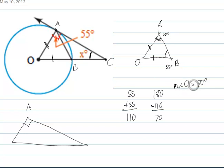And I solved for angle O, which is 70 degrees. I know this is 90, and if I want to find x, I just do 90 plus 70, that's going to be 160, and then I do 180 minus 160, and then I get x is equal to 20 degrees.